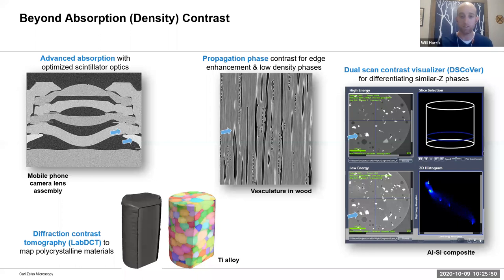Shifting gears a little bit: there are different ways we can use x-rays for advantage from a contrast perspective. Similarly to how a light microscope or an electron microscope has different types of signal you can collect, we can do similar things with x-rays.